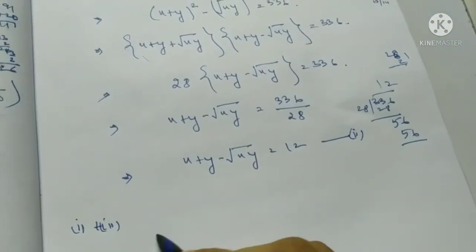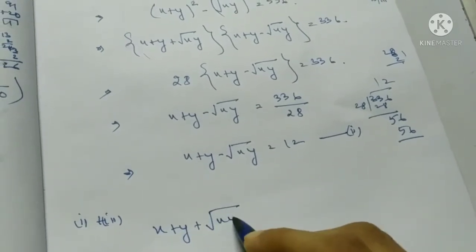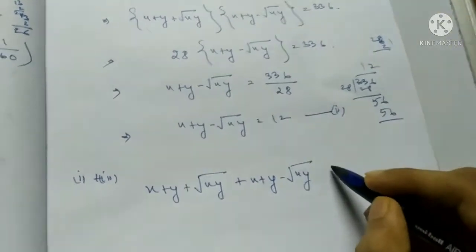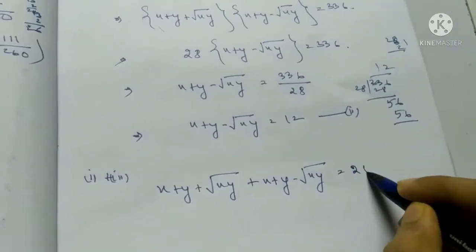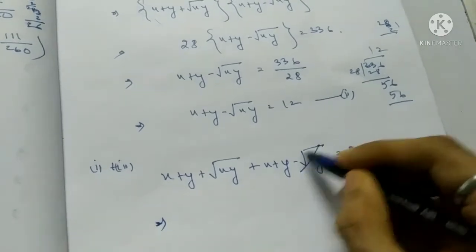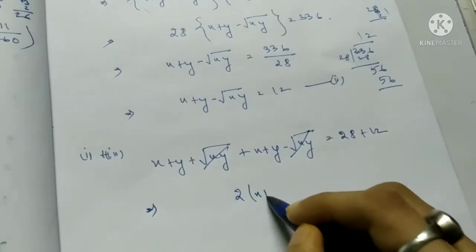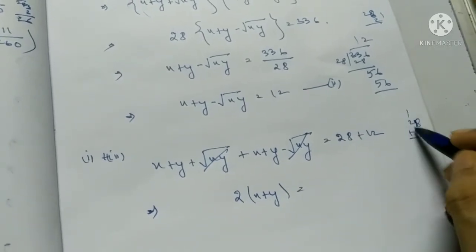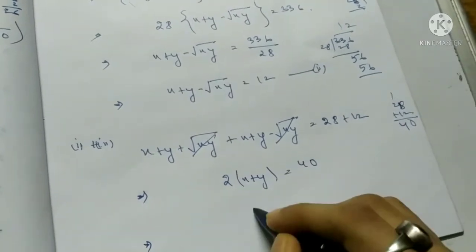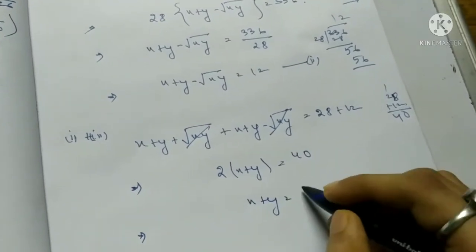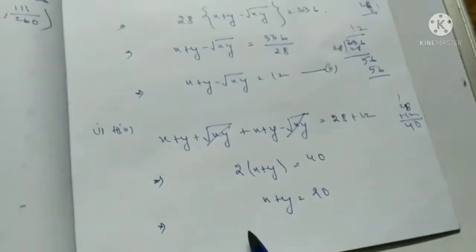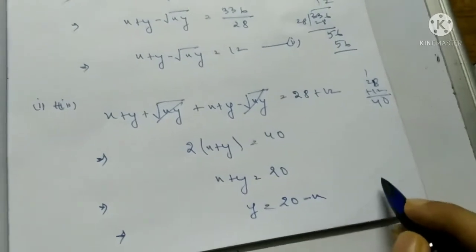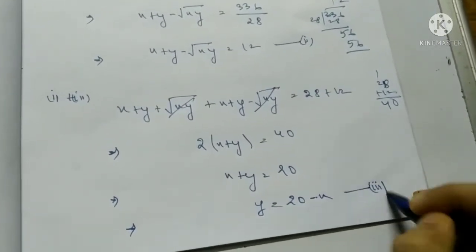Adding equation 1 and equation 2: 2(x plus y) equals 28 plus 12 equals 40, so x plus y equals 20, giving y equals 20 minus x. This is equation 3.